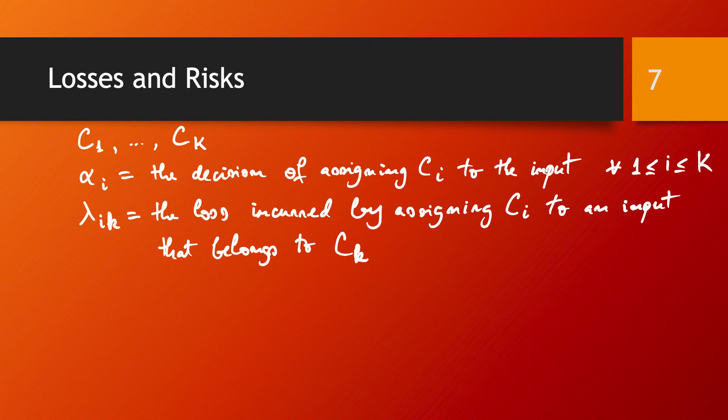— lambda_ik is going to be the loss incurred by assigning class c_i to an input that belongs to class c_k. So the real class was c_k but we assigned class c_i, and we denote this loss by lambda_ik. With these notations we can now write the equation for the expected risk.